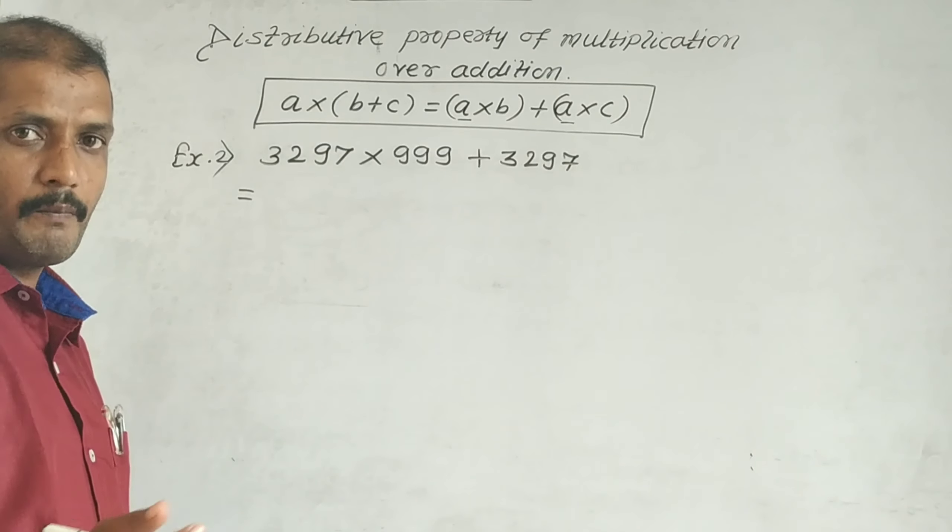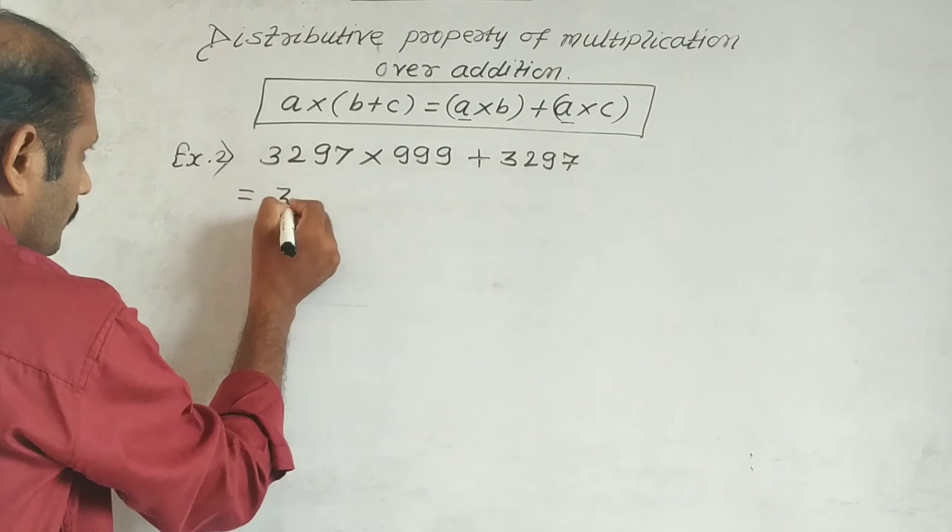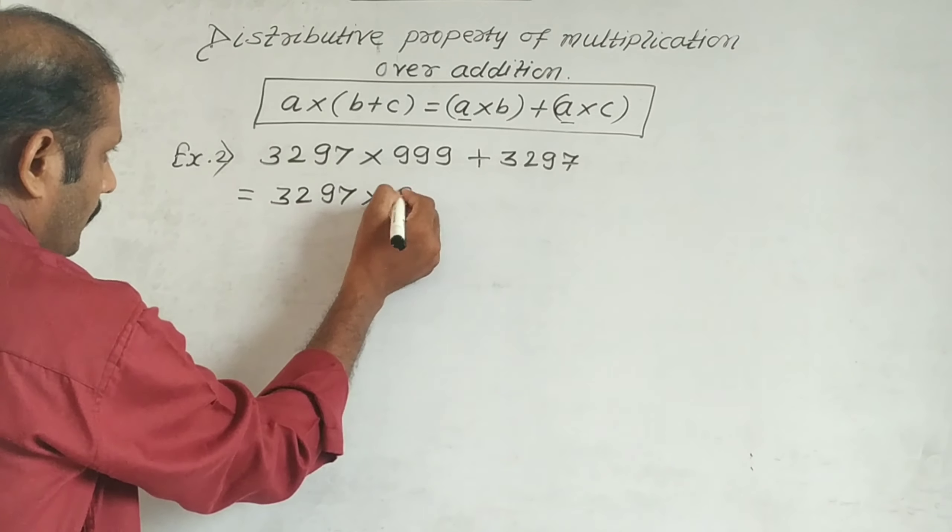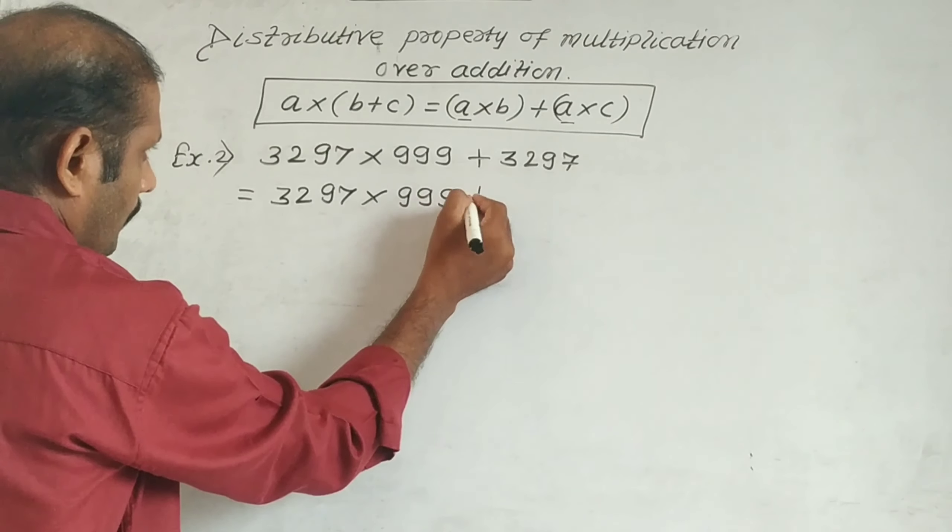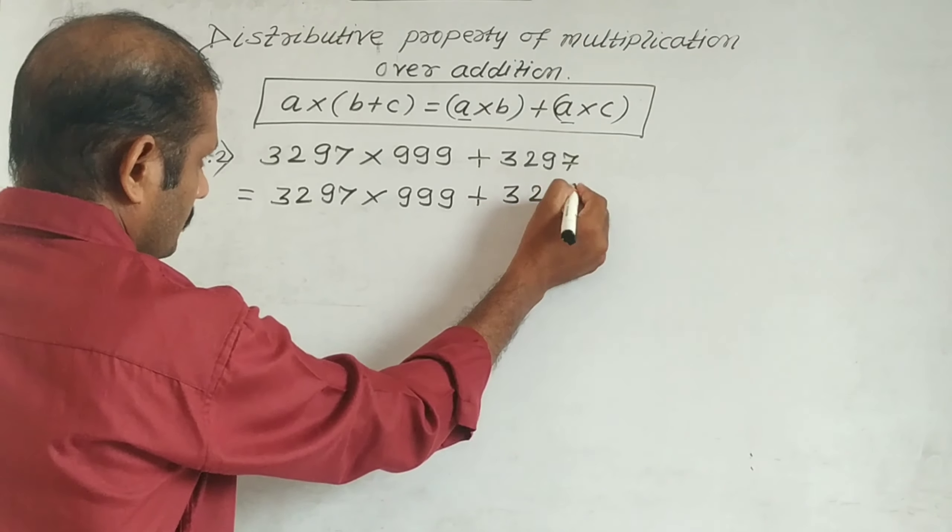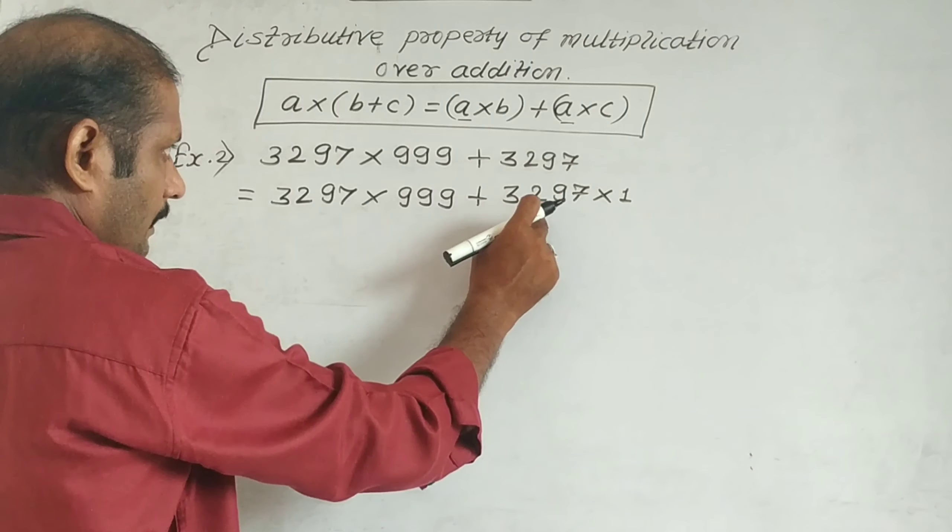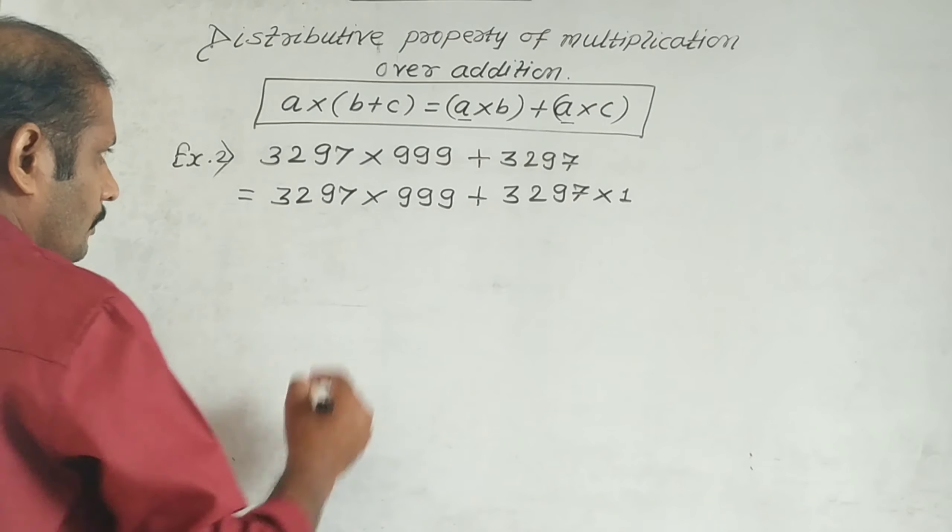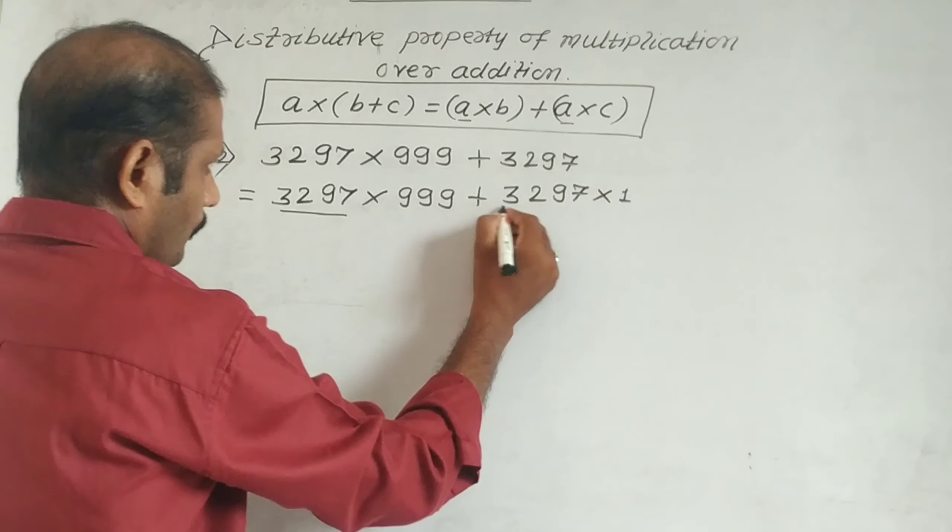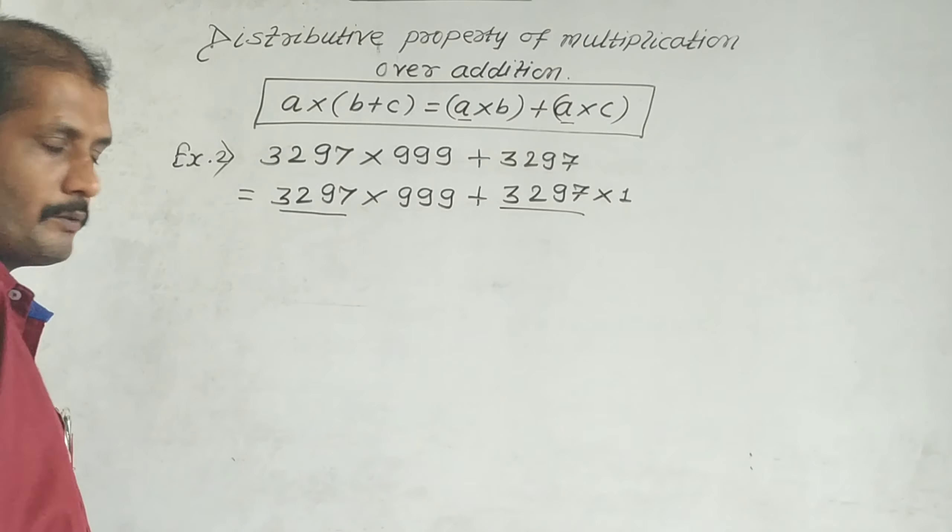So (3297 × 999) + (3297 × 1). When we multiply by 1, we get the number as it is. Now in both terms, 3297 is common, so we take it outside the bracket.